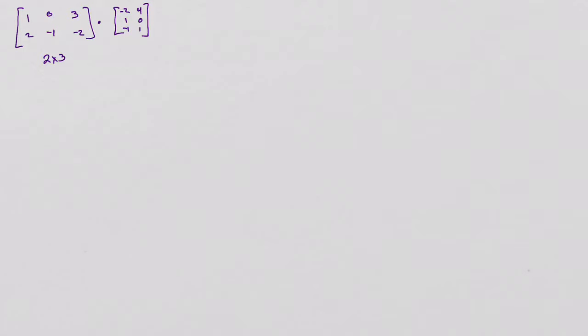All right, now let's look at the order. This first one right here, we have 2 rows and 3 columns, therefore this is a 2 by 3. This next one, I have 3 rows and 2 columns, therefore this is a 3 by 2.